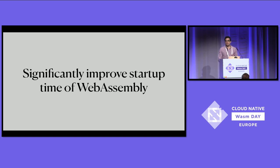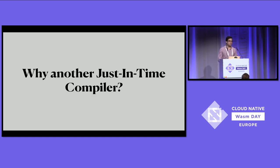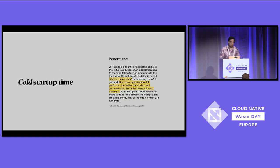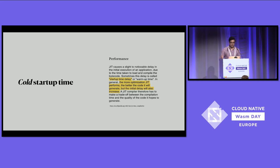When we talk about compilers, the question that comes to everyone's mind is: why do we need another just-in-time compiler? It's a very valid question. We want to optimize to improve cold startup time. When you look up JIT on the internet, many statements mention startup delay — the more optimizations a JIT performs, the better code it will generate, but the initial delay will also increase. So your application would take longer to start and get that first execution. The idea of optimizing for startup time is not new.